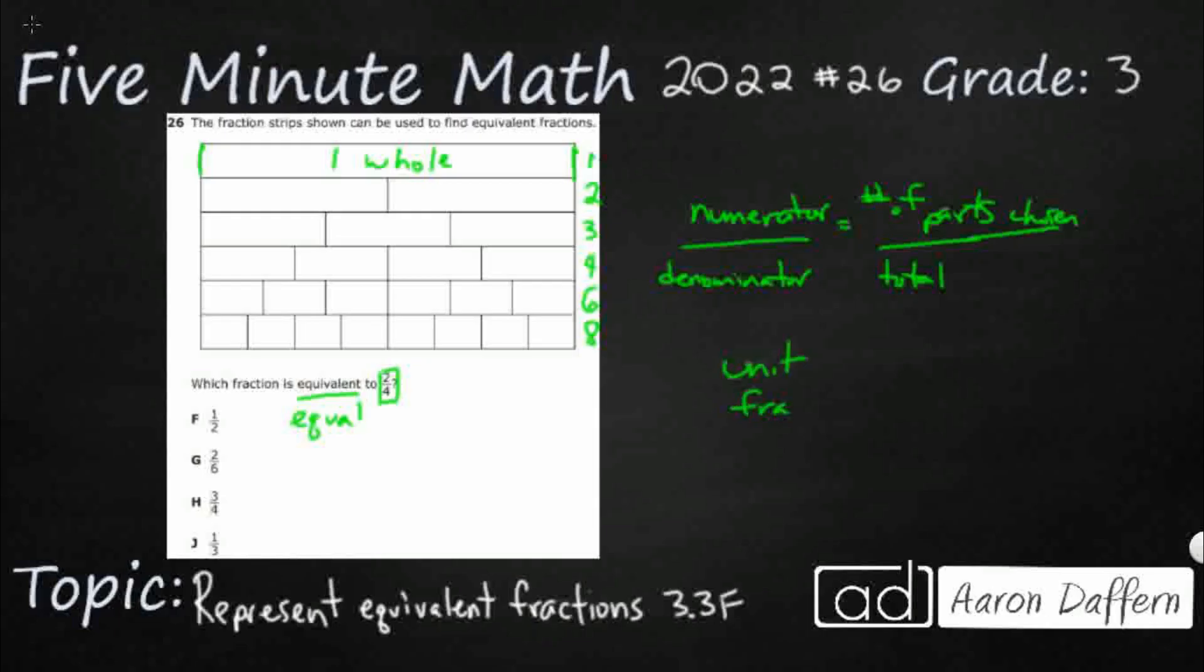I'm going to make each of these unit fractions. Unit fractions are when you have a numerator of one, one over something. So there's two parts here, so each of these is going to be one half, because it's one part out of two total. I'm going to work my way down here. So here are my thirds. I'm going to get one third, one third, one third.